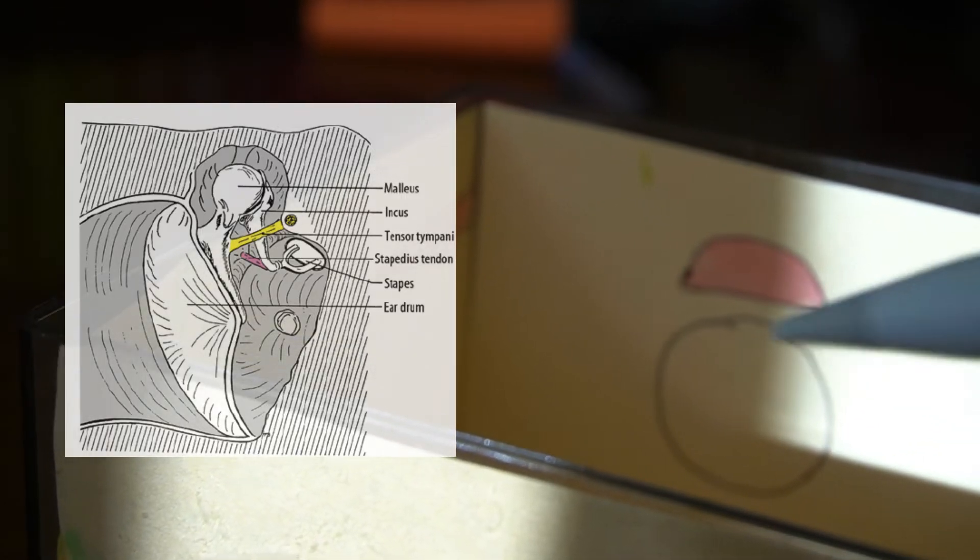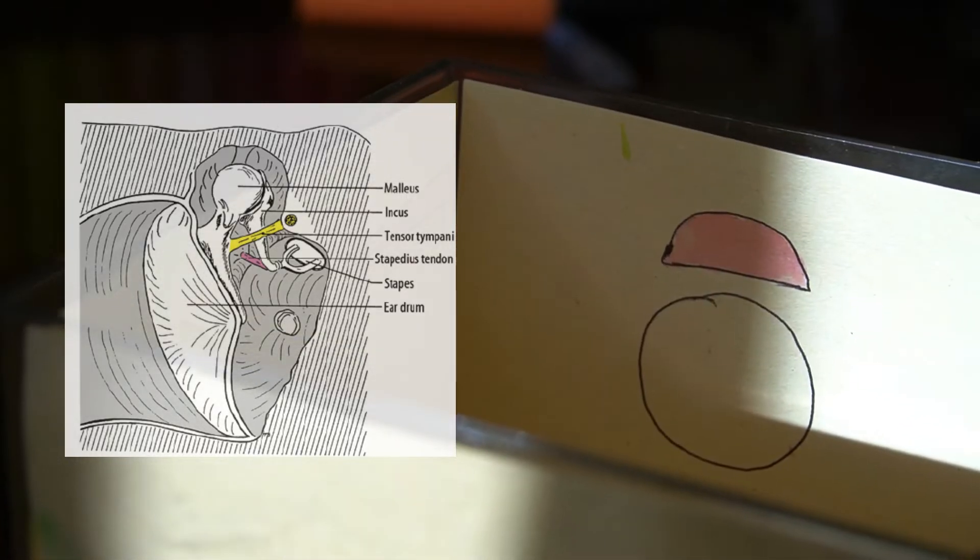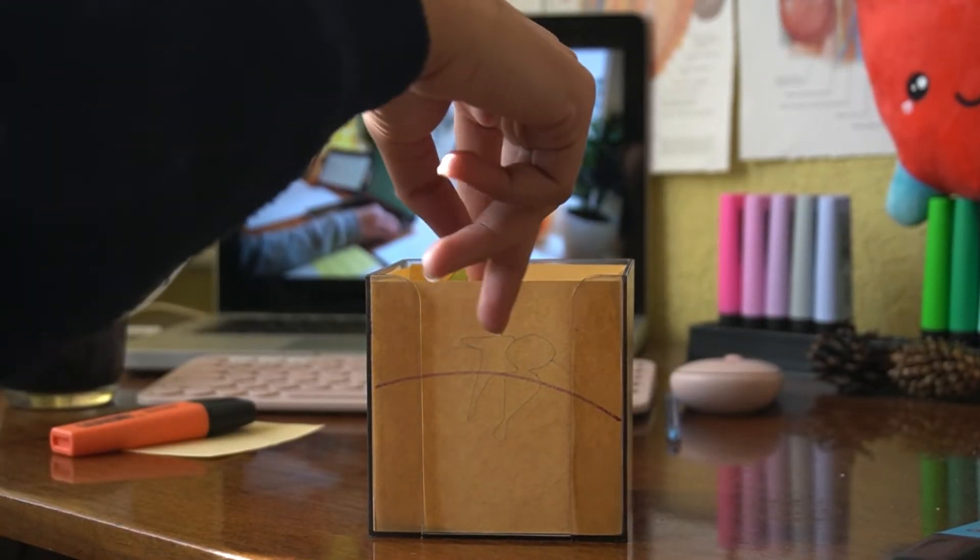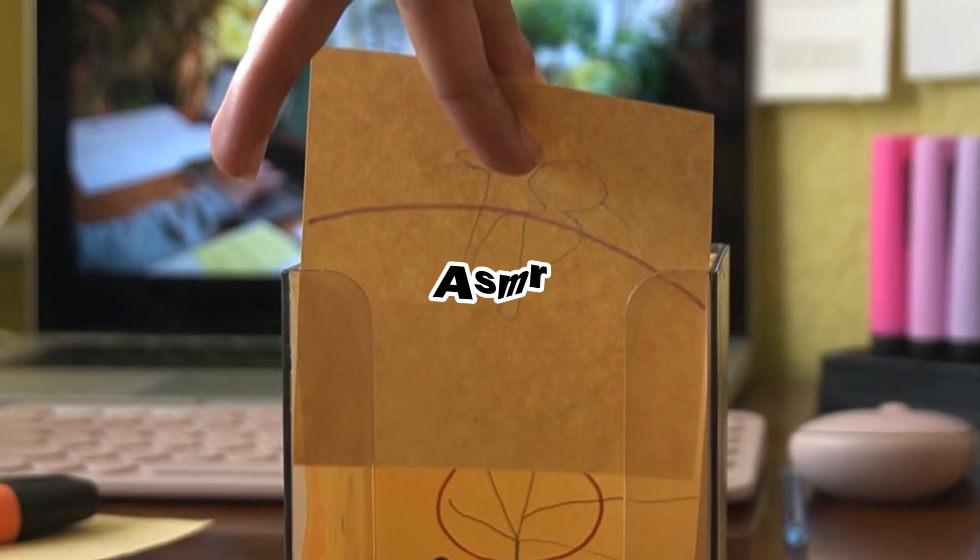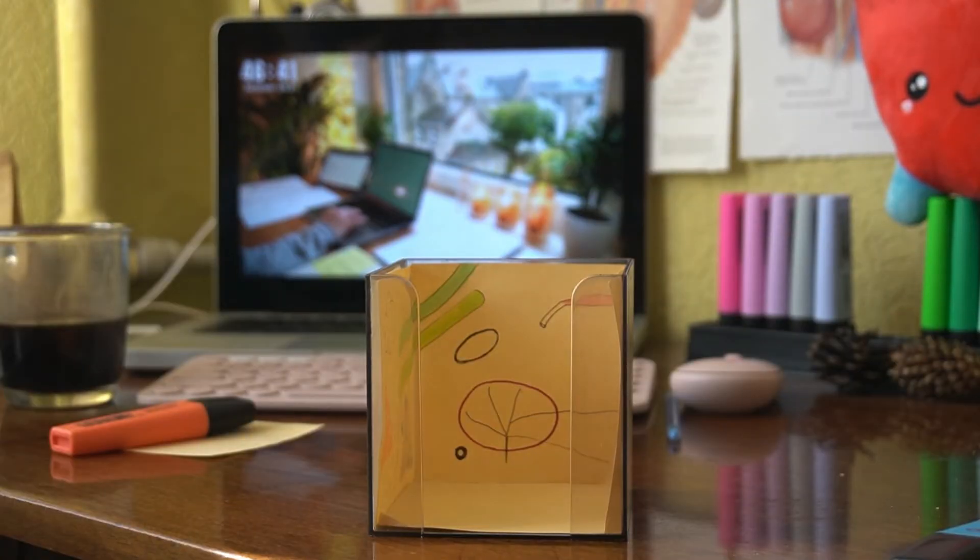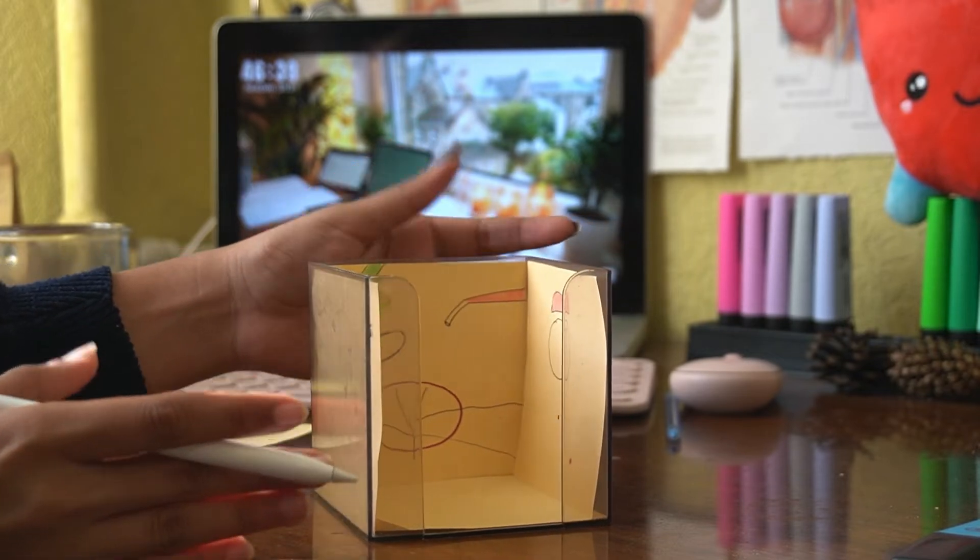The function of the tensor tympani muscle is to dampen sound in case of loud noises. So if we remove the lateral wall—the lateral wall with respect to the tympanic cavity—we can see clearly the anterior and the medial wall of the tympanic cavity.